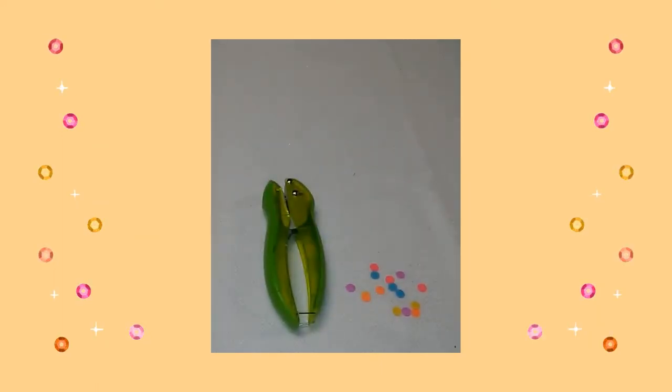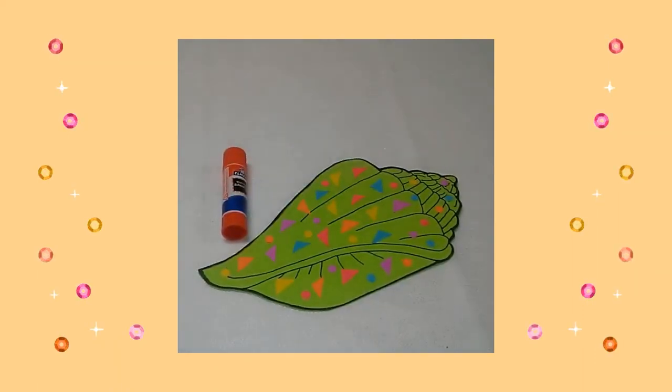Next, I used my hole punch to make small circles. Then I glued my small circles and triangles on my seashell.